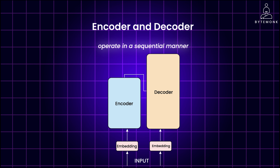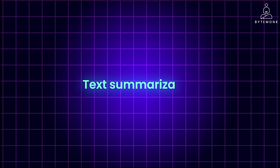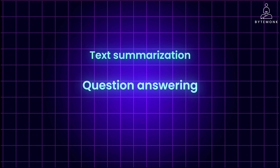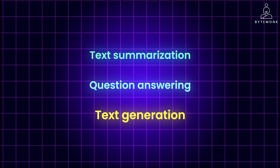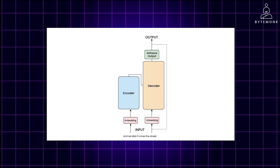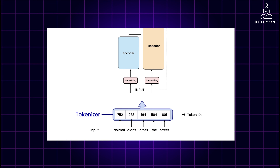Finally, the encoder-decoder structure is not limited to machine translation. It equally applies to text summarization, where the encoder processes the full text and the decoder generates a condensed summary; to question answering, where the encoder processes a passage and the decoder generates the answer; and to text generation, where the encoder processes a prompt and the decoder generates creative text formats like poems or quotes. In future videos, we'll dive deeper into the training process of large language models built on the transformer architecture.